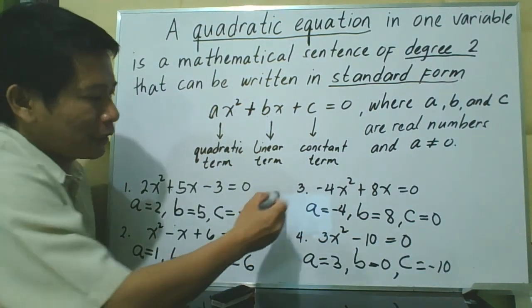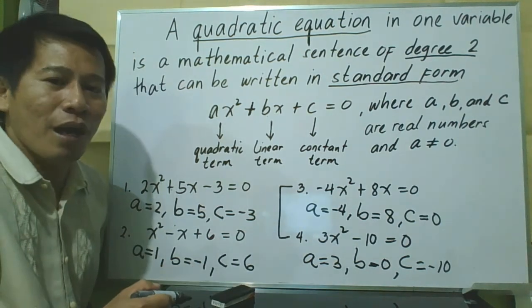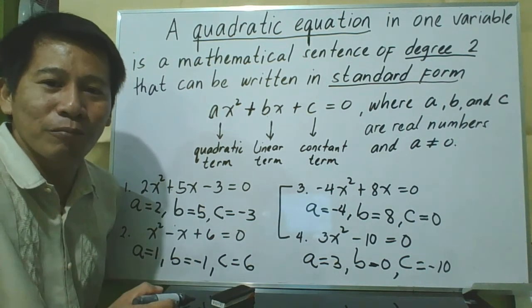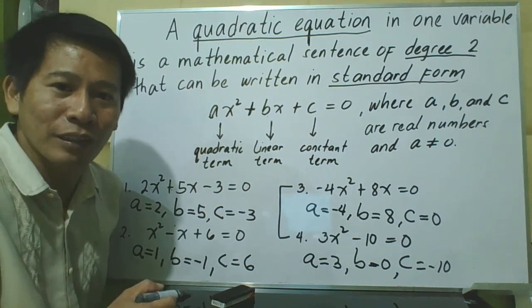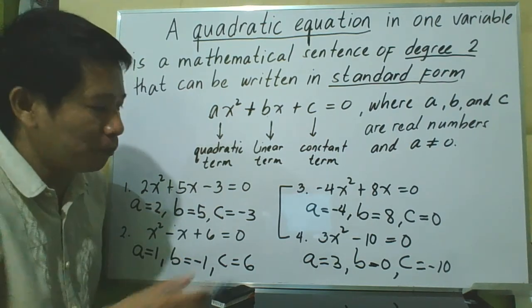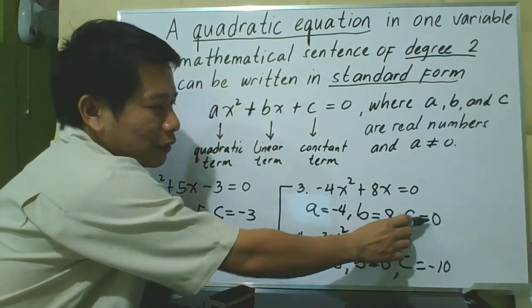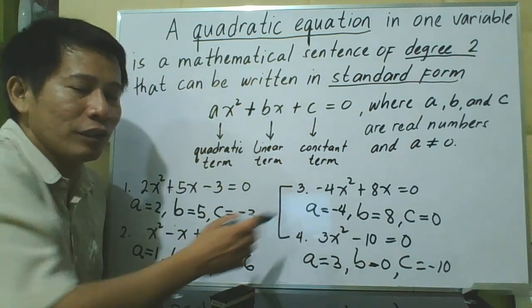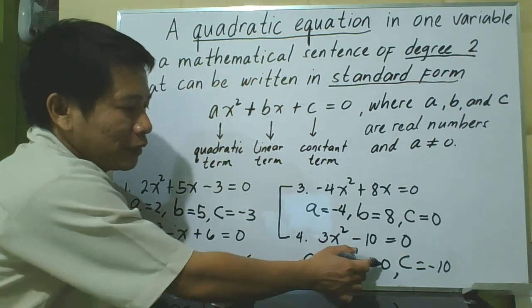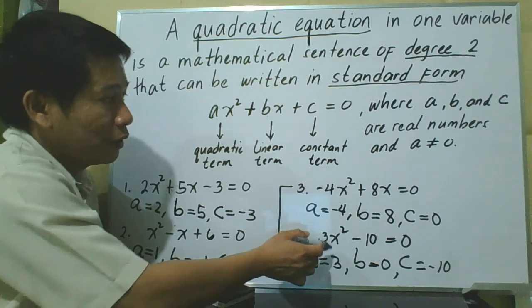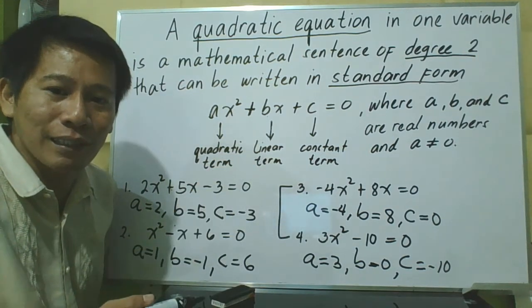These examples — numbers 3 and 4 — are often called incomplete quadratic equations. Because in number 3, c is 0 and there is no constant term. In number 4, b is 0 and there is no linear term. But still, they are considered quadratic equations.